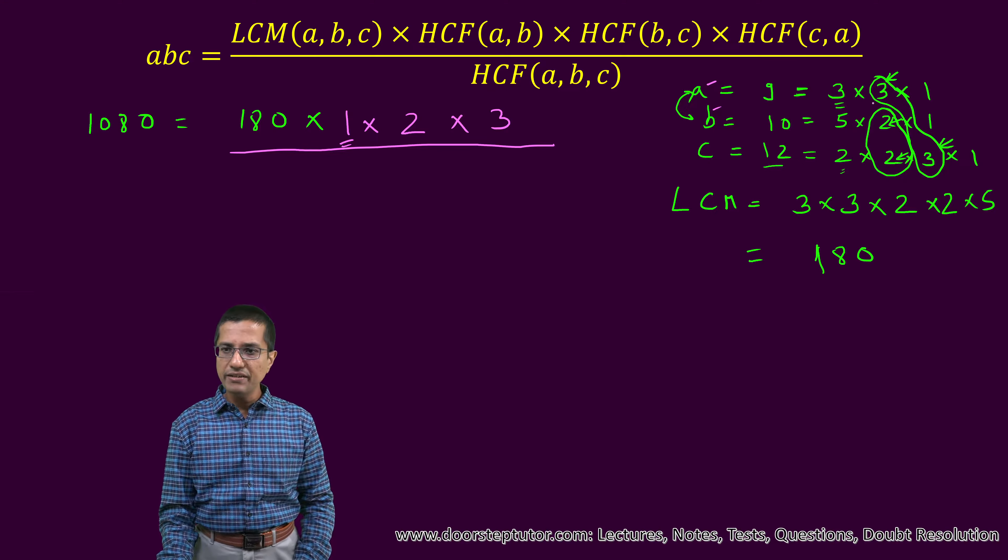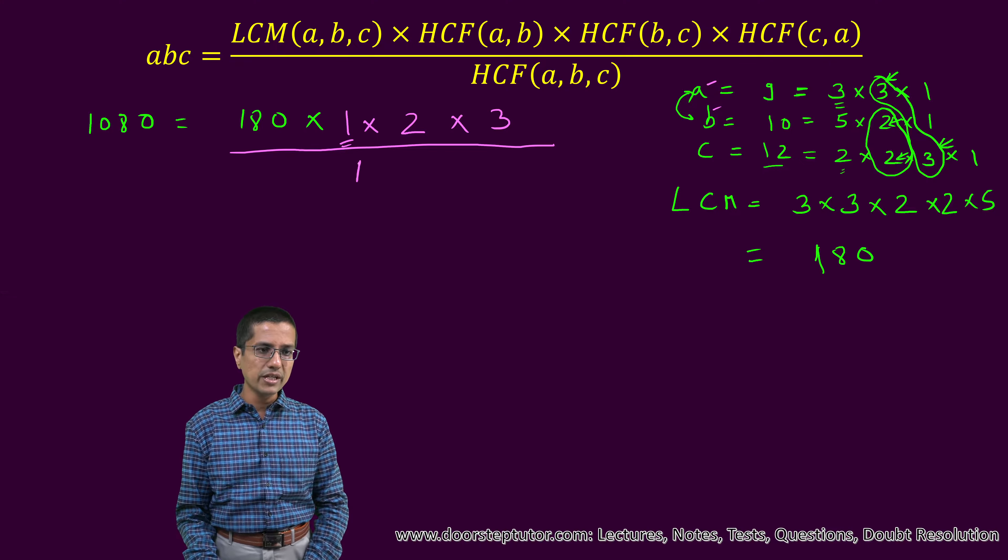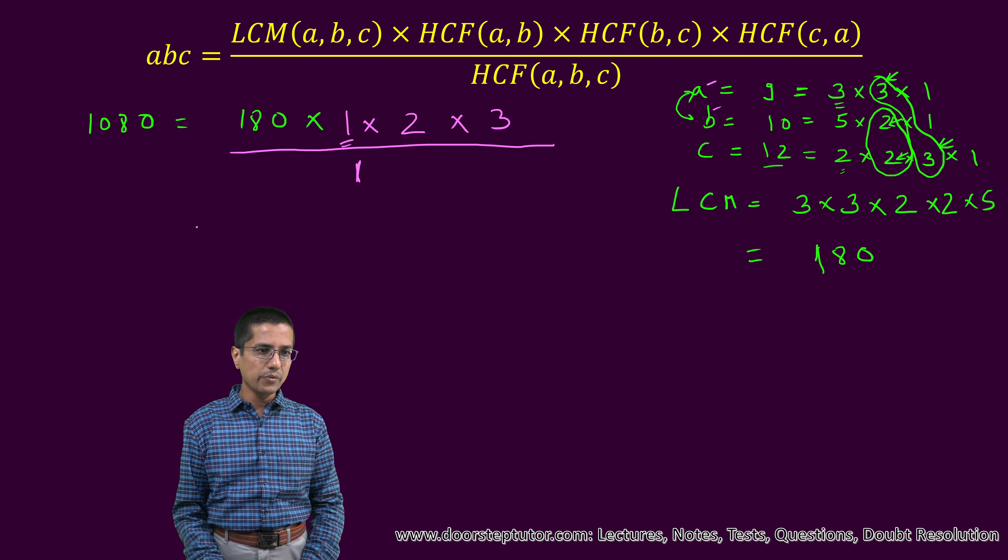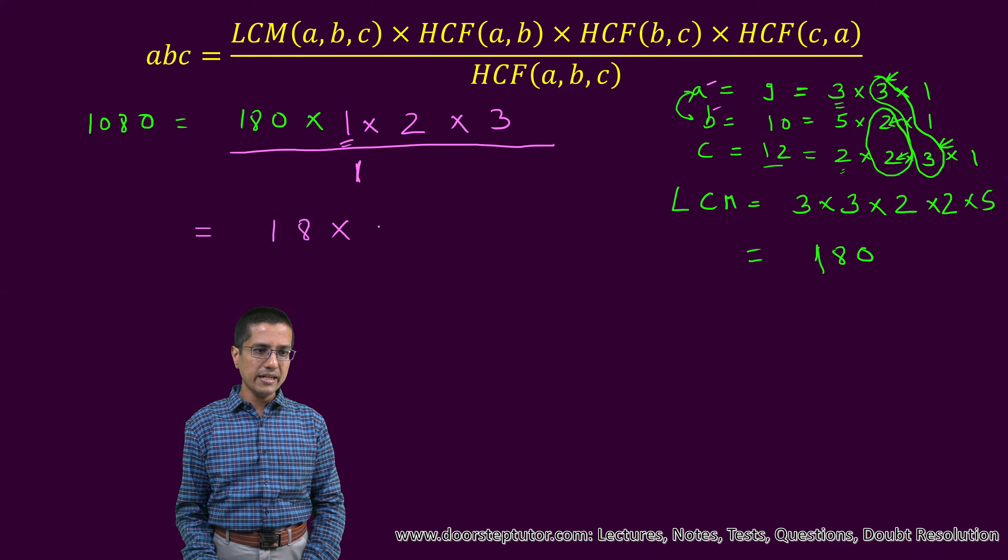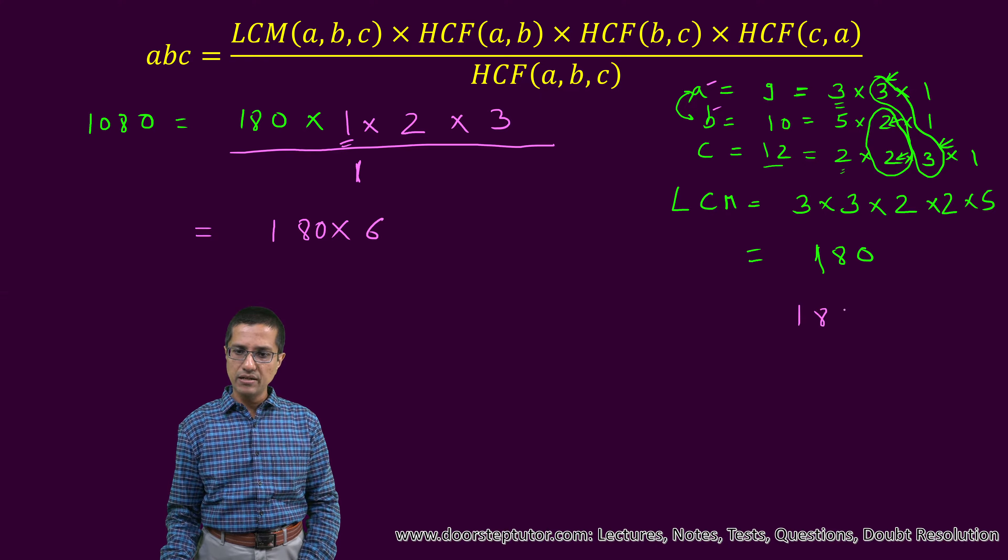We have to write here. But are there any factors common between these three? There are no factors common between these three. So of course, the only factor common is one. So we write one here. So on this side, we have 180 into 6, 180 into 6. Let us just do this multiplication.